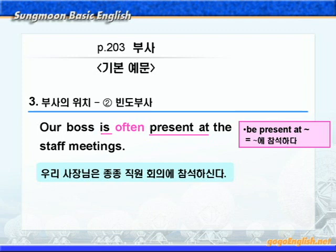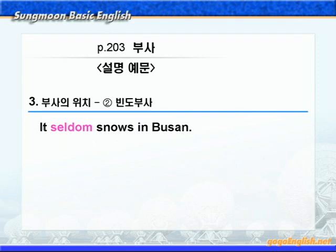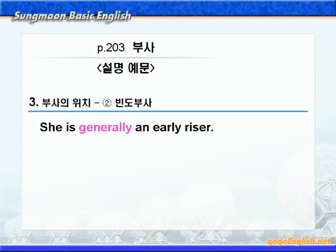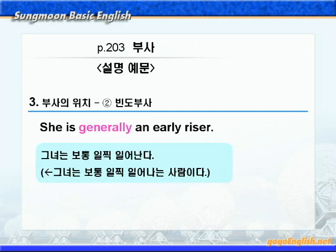빈도 부사 always가 일반 동사 wears 앞에 온 것입니다. 'Our boss is often present at the staff meetings.' be present at은 '~에 참석하다', staff는 '직원' 이런 뜻이니까 '우리 사장님은 종종 직원회의에 참석하신다' 이런 말이 되겠습니다. 빈도 부사 often의 위치가 중요하죠. be동사, 즉 is 뒤에 왔습니다. 'It seldom snows in Busan.' seldom은 '좀처럼 ~않다' 이런 뜻이니까 '부산에는 좀처럼 눈이 오지 않는다' 이런 말이 되겠습니다. 빈도 부사 seldom이 일반 동사 snows 앞에 왔죠.